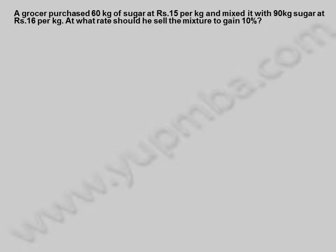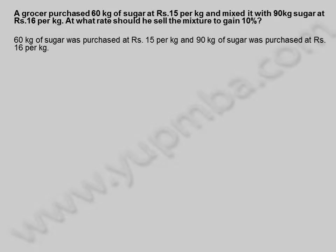A grocer purchased 60 kilograms of sugar at 15 rupees per kilogram and mixed it with 90 kilograms of sugar at 16 rupees per kilogram. At what rate should he sell the mixture to gain 10 percent? 60 kilograms of sugar was purchased at 15 rupees per kilogram and 90 kilograms of sugar was purchased at 16 rupees per kilogram.